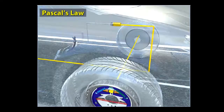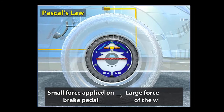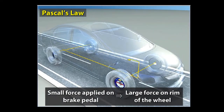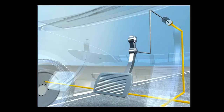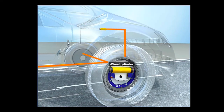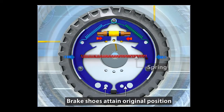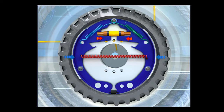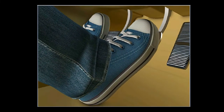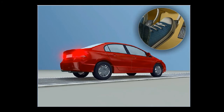This slows down the car. A small force applied on the brake pedal translates into a large force on the rim of the car's wheel, and it is this large force that slows down or stops the car. When the pedal is released, the fluid moves back from the wheel cylinder to the master cylinder, and the spring pulls the brake shoes back to their original position, which in turn makes the pistons return to their original position. When you take your foot off the brake pedal, the brakes are released.